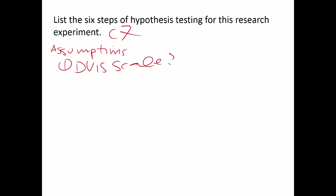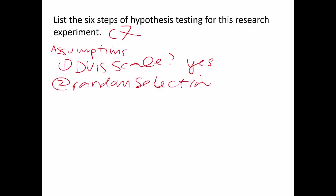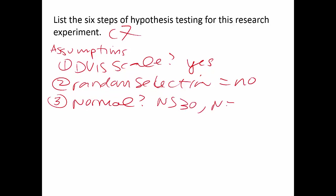Can we have random selection? We already decided the answer is no — I don't have access to everybody. Is the distribution normal? For normal distributions, you need to be told it's normal or have n>30. Here n=25, so it's pretty close but we can't fully assume normality. This example uses a Z distribution.